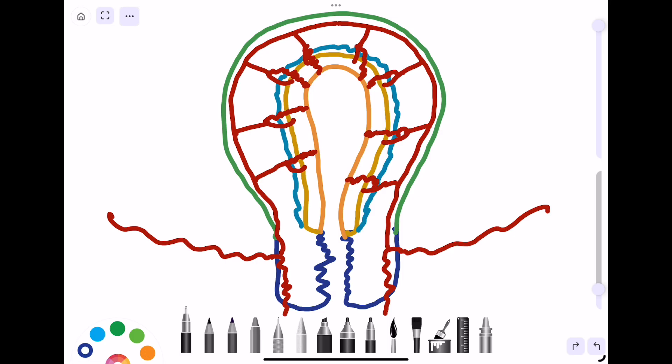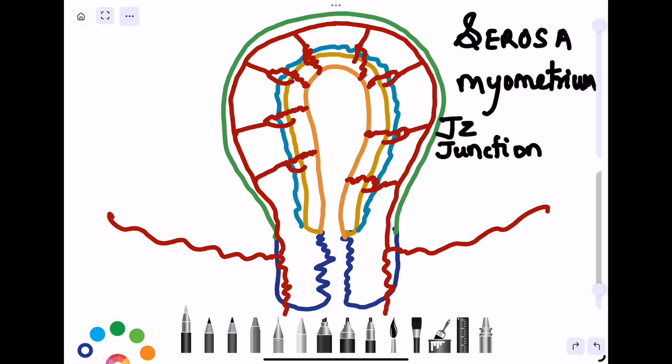First, the uterus: if you move from outside to the inside, the inside part is hollow. The outermost layer is known as serosa, which is marked with green. The middle part, which is the muscular part,